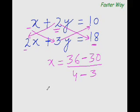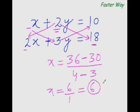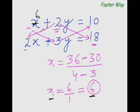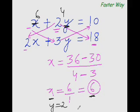So the answer is 36 minus 30 is 6, and 4 minus 3 is 1 — 6 over 1 is 6, so x equal to 6. Now substitute this value in any of the two equations. You know x is 6, so 6 plus something equals 10 — that's 4. And 2 times what equals 4? 2 times 2 equals 4, so y equal to 2. That is your answer. You can do this mentally!